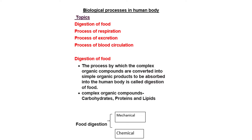We'll start our lesson from digestion of food. Digestion of food can be simply defined as a process of converting complex organic compounds into simple organic products which can be easily absorbed into the human body. Complex organic food compounds include carbohydrate-containing foods and protein-containing foods. Mechanical digestion and chemical digestion are the two processes involved in food digestion.